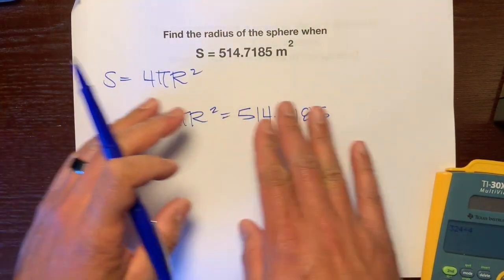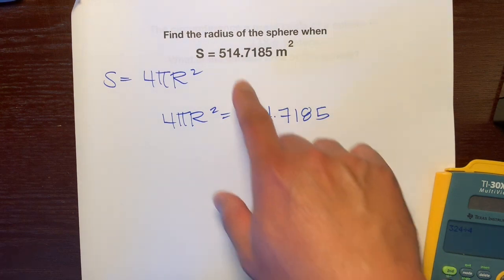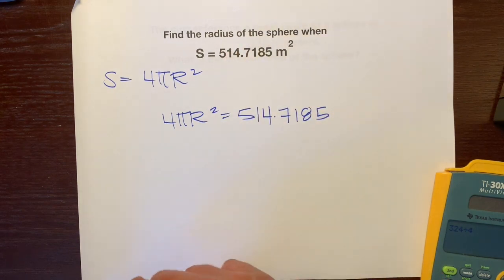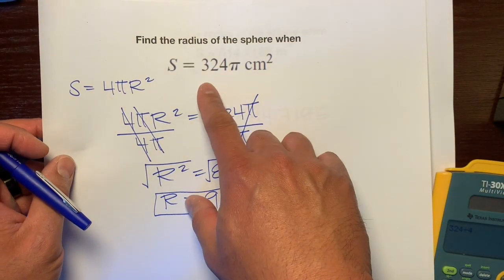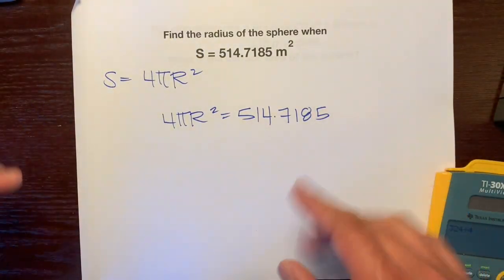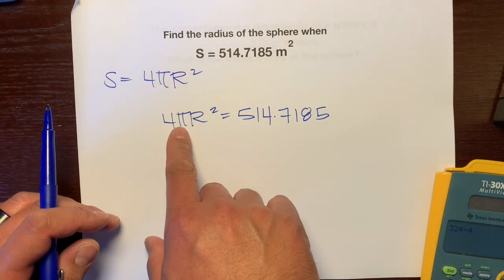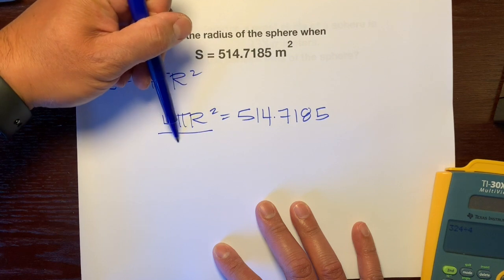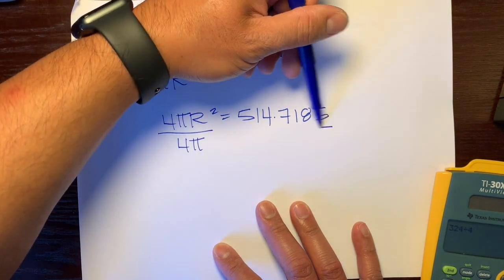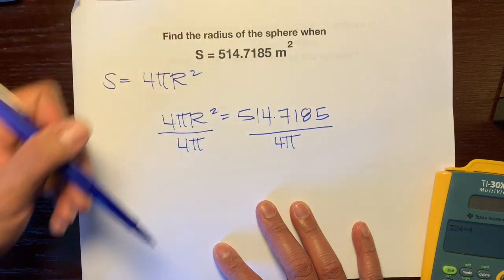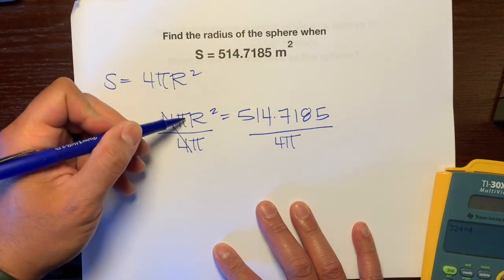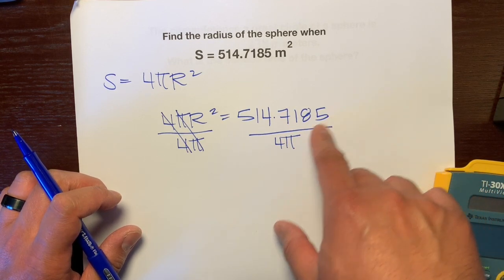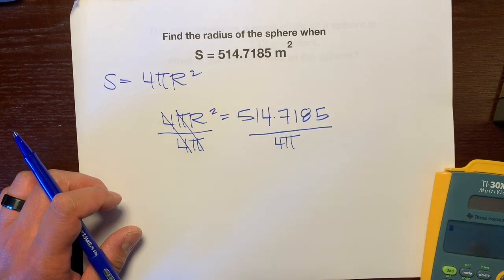There's one major difference here. This surface area isn't left in terms of pi — they actually used a calculator and multiplied by pi. The previous one was left in terms of pi. But it's the exact same steps. This is 4 times pi times r squared, and we want to get the radius by itself. The opposite of multiplication is division, so we'll divide both sides by 4 pi. The 4s and pi's cancel out, but here we don't have a pi to cancel, so this is where we pick up our calculator.